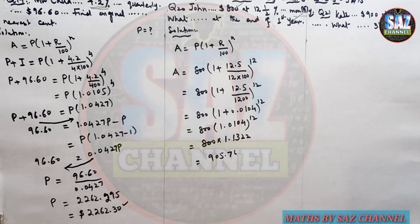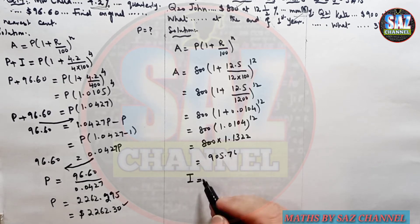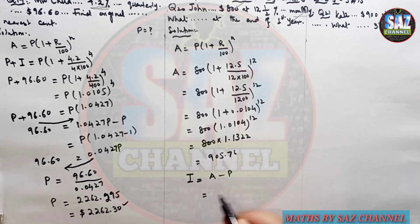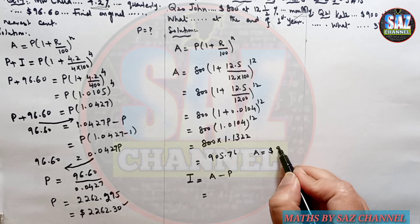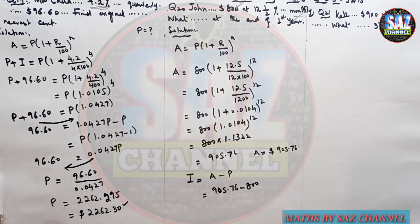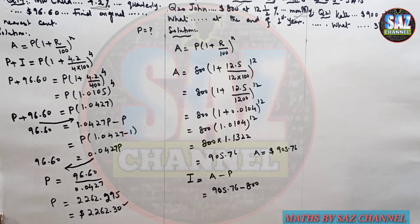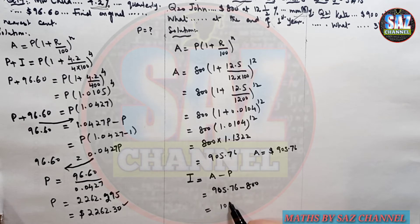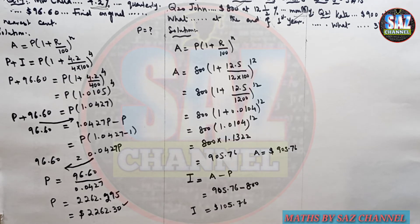So Amount = 800 × 1.1322 = 905.76. Since the question asks for the amount of interest, we subtract the principal: Interest = 905.76 − 800 = 105.76. So the amount of interest at the end of the first year is 105.76.